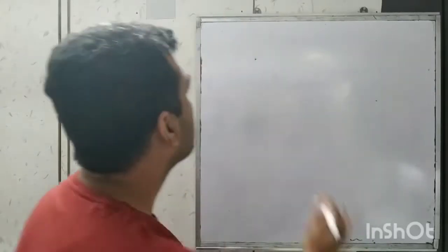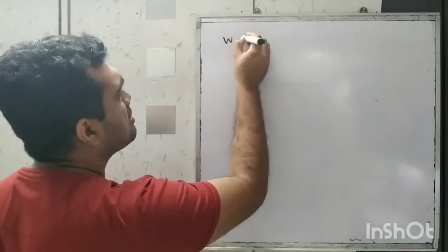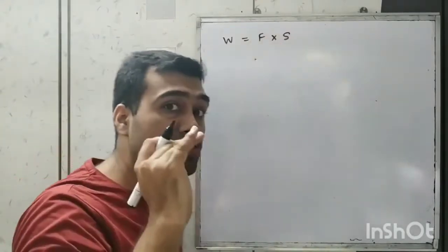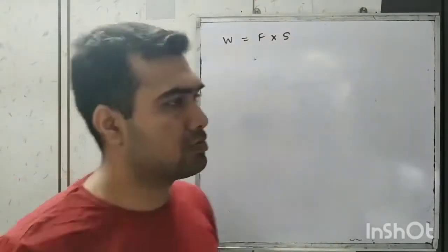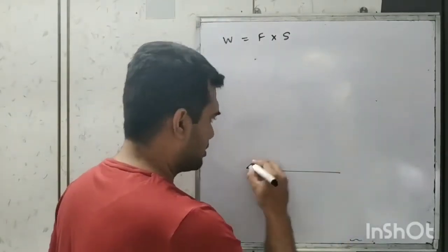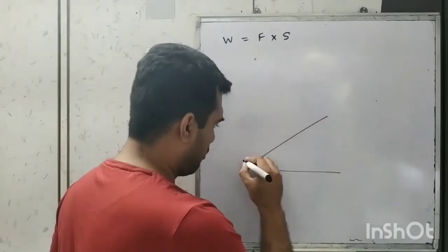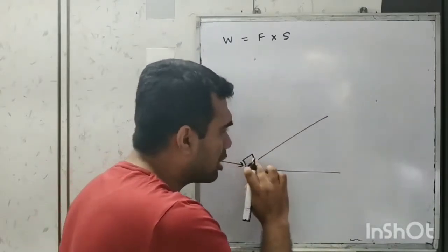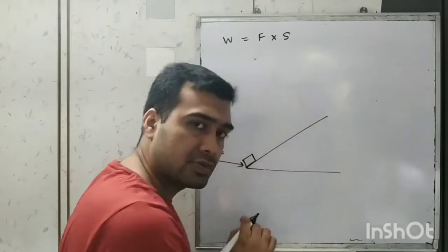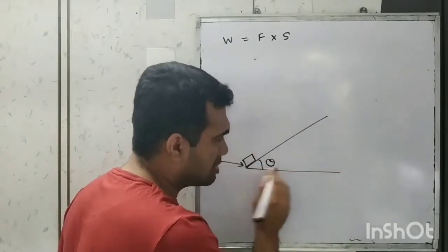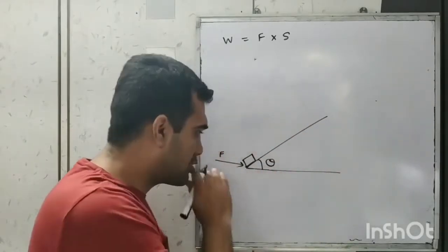The formula for work is force into displacement in the direction of force. Now let's consider a few scenarios. Imagine that a force is being applied horizontally to push an object along a slope which is at an angle theta with the horizontal direction — that is the direction of the force.